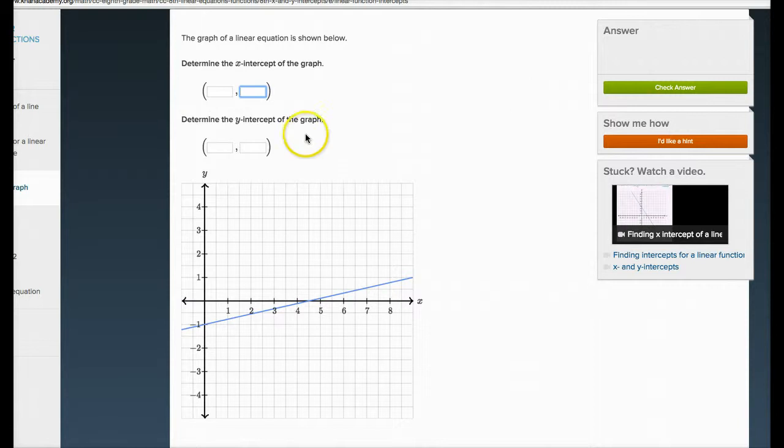Remember, it's x, y. It's an alphabetical order. Put zero there. With the y-intercept, you're going to put zero there.